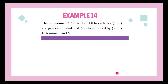For Example 14, the polynomial 2x³ + ax² + bx + 8 has a factor x − 1, and gives a remainder of 50 when divided by x − 3.